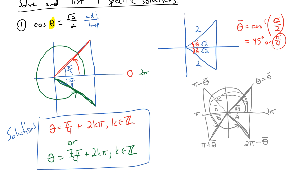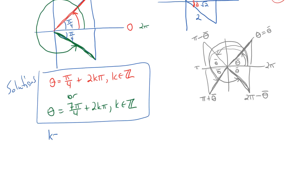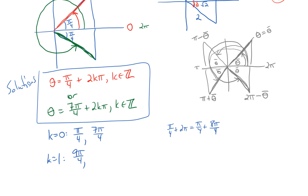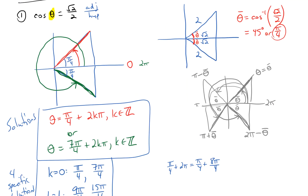For four specific solutions, plug in k values. With k=0: pi/4 and 7pi/4. With k=1: pi/4 + 2pi = 9pi/4, and 7pi/4 + 2pi = 15pi/4. So our four specific solutions are pi/4, 7pi/4, 9pi/4, and 15pi/4. That's our first example — a basic warm-up.